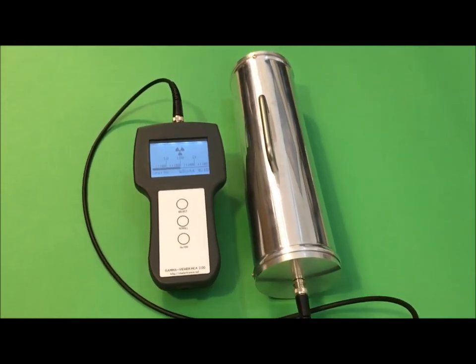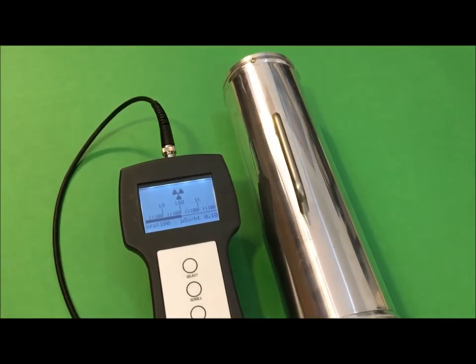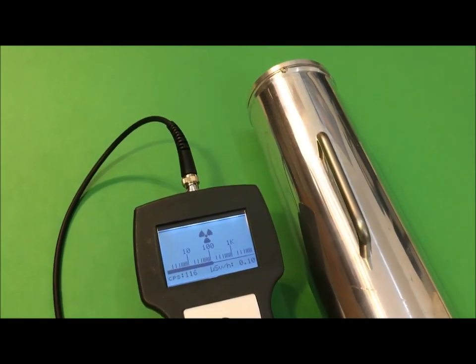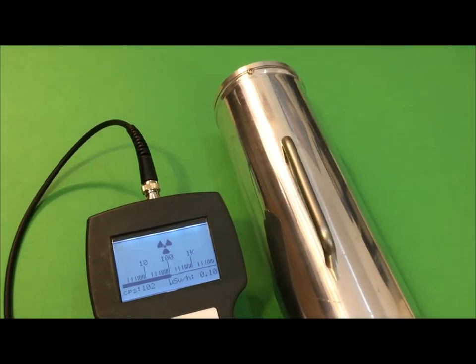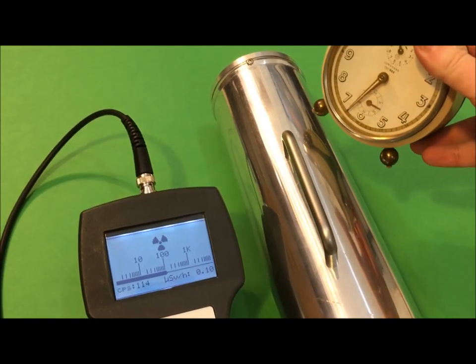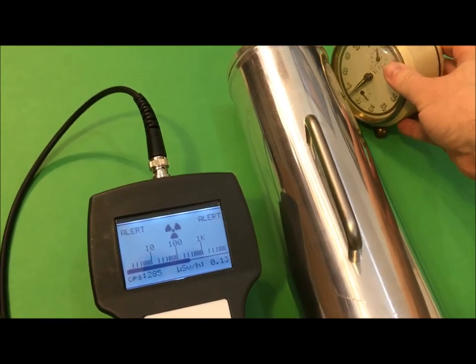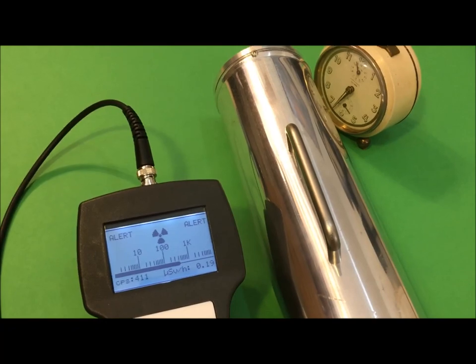For the test, I'm using my multichannel analyzer device with 63x63 millimeter sodium iodide scintillation crystal and 76 millimeter photomultiplier probe. It can work as a scintillation detector and as a simple gamma spectrometer for instant detection and spectrum visualization.